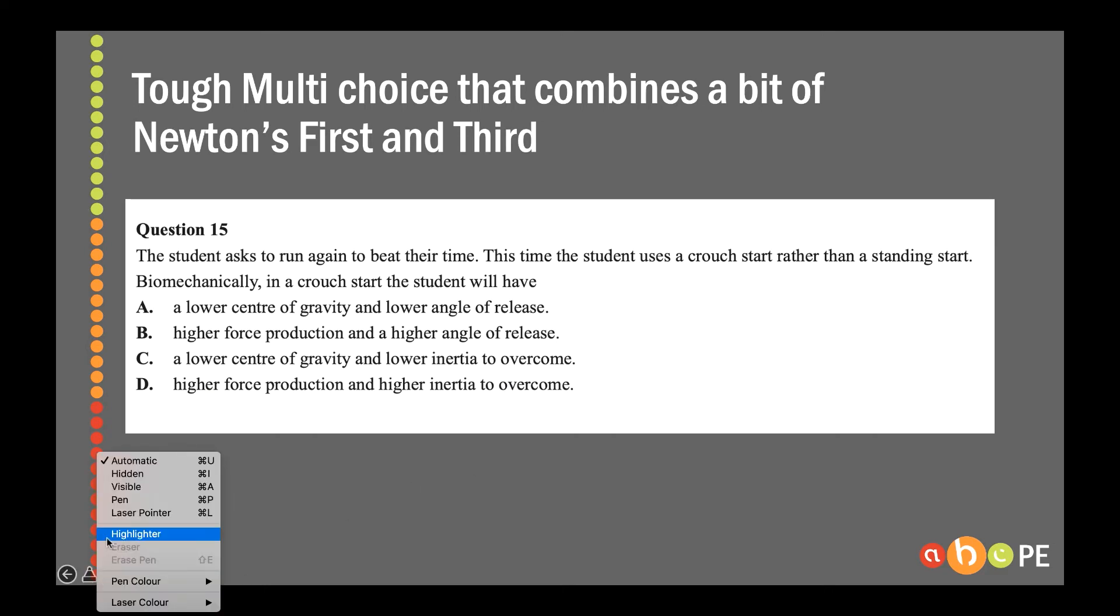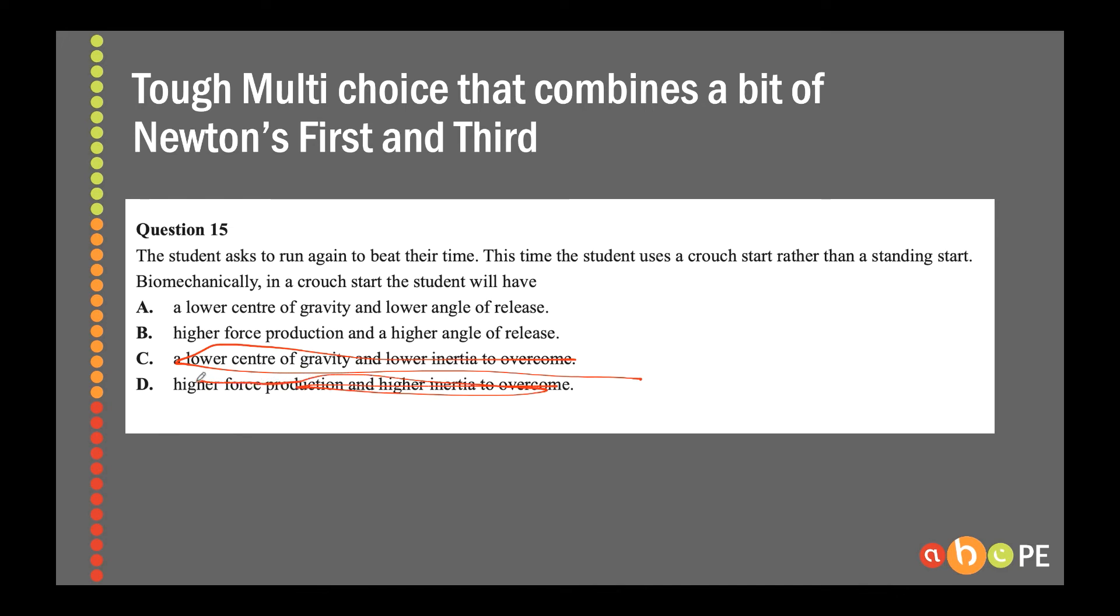With these multi-choice questions, the best way to go is to try and eliminate a couple of options if you can. And in this case, hopefully from our knowledge of Newton's first law, we know that it's the same student, so the same runner, they have the same mass, therefore inertia can't change. There's not a higher or a lower inertia. Inertia remains constant because the mass of the student remains constant.